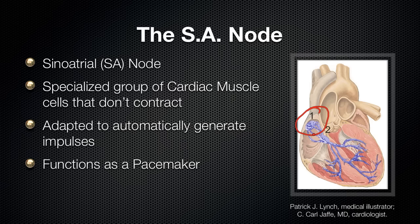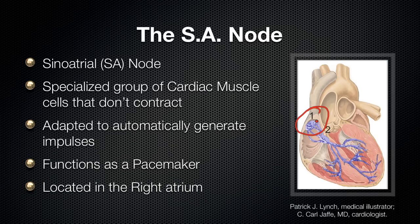We have the AV node and some other stuff that we're going to talk about, but the SA node generates signals faster than any of the others, so it sets the pace for the heartbeat. As you can see, it is located in the right atrium.